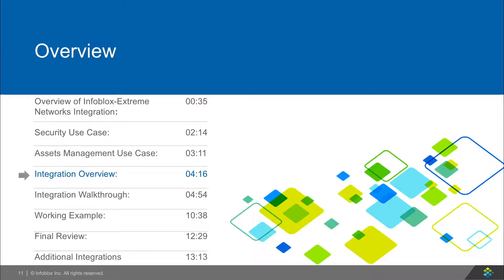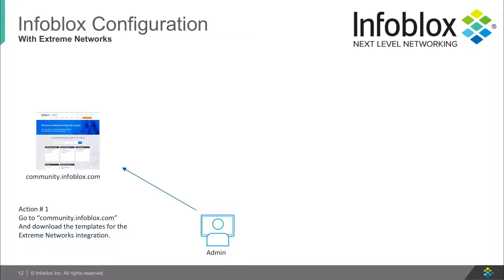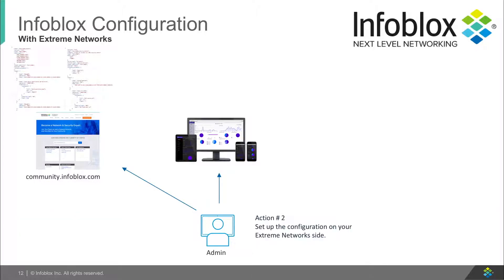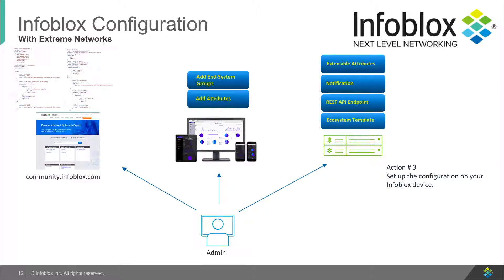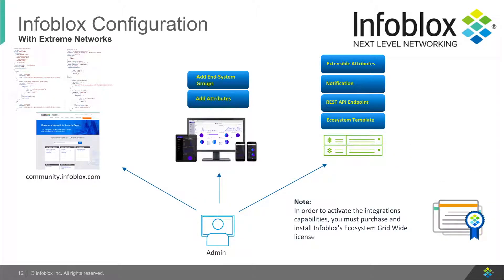Now, let's see how to set everything up. First, you'll want to go to community.infoblox.com and download the templates for the Extreme Networks integration. Second, you'll want to add the in-system groups and set up the distributed IPS on the Extreme Management Center. Finally, you'll want to set up your Infoblox grid for the integration — add some extensible attributes, then add the templates, add the endpoints, and add the notifications. For a final note, you'll need to purchase and download Infoblox's ecosystem grid-wide license in order to activate the integration's capabilities.